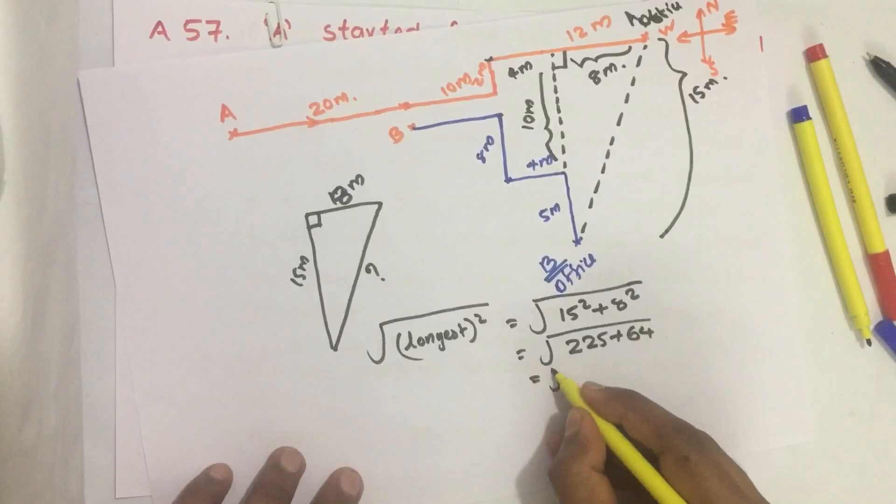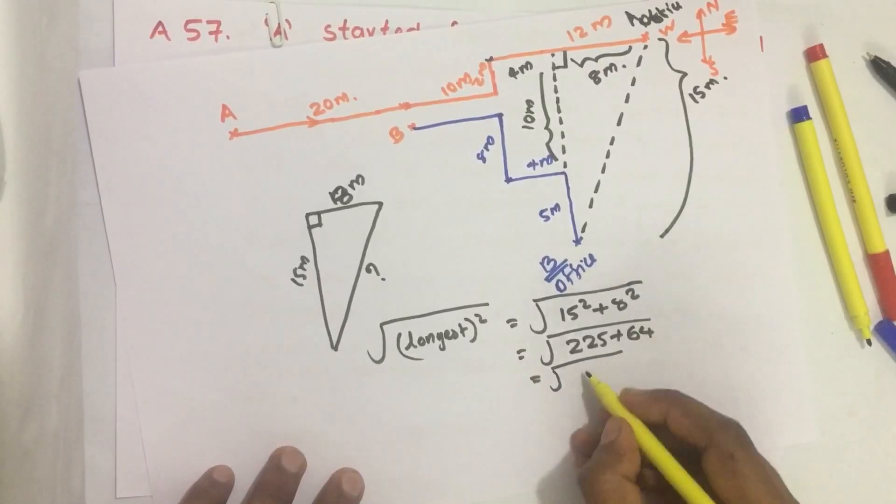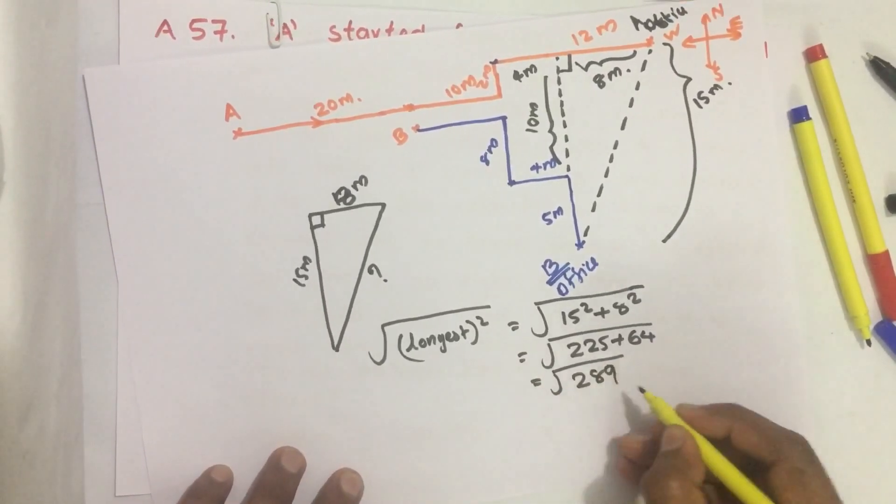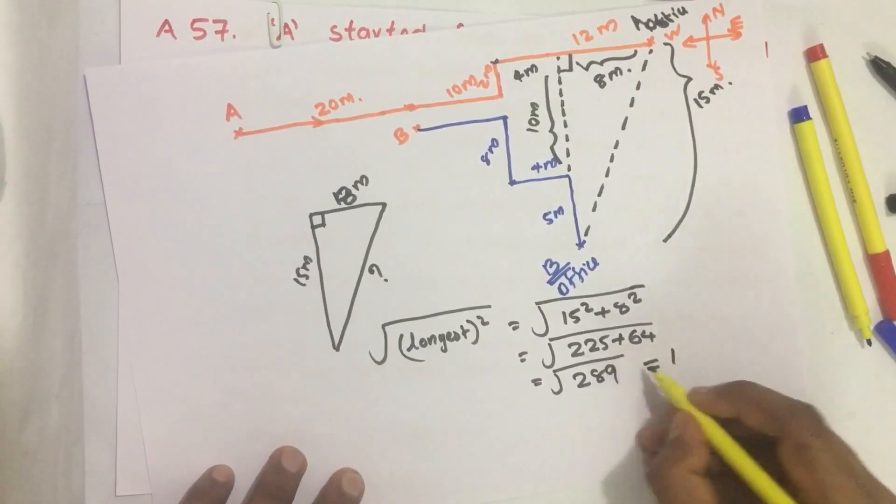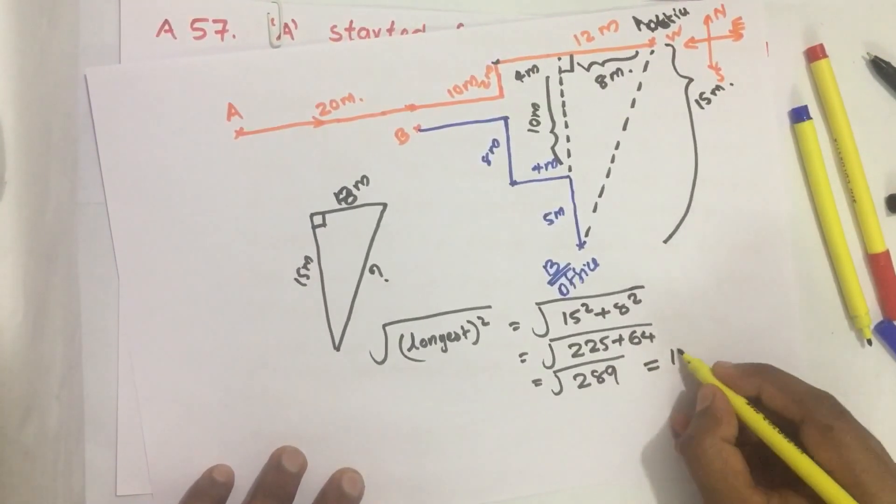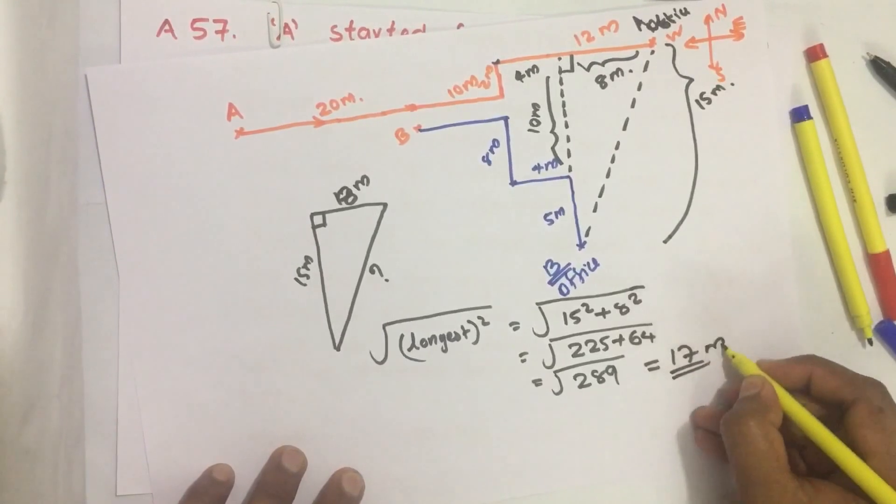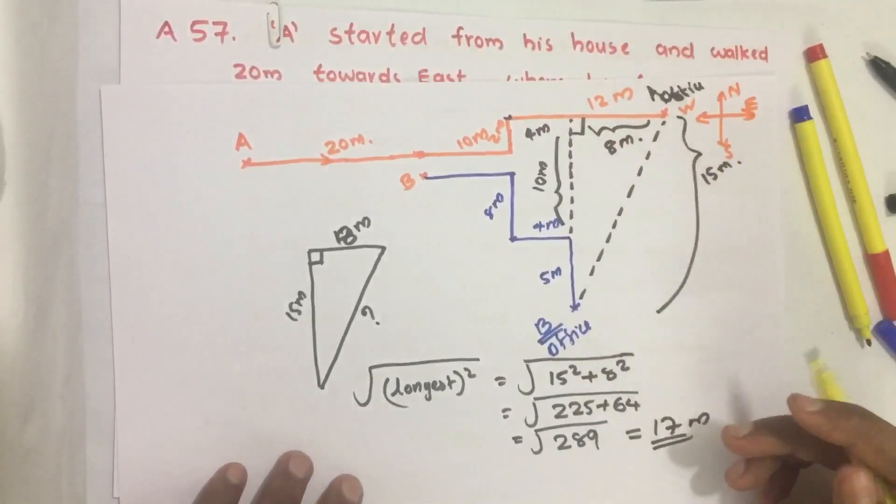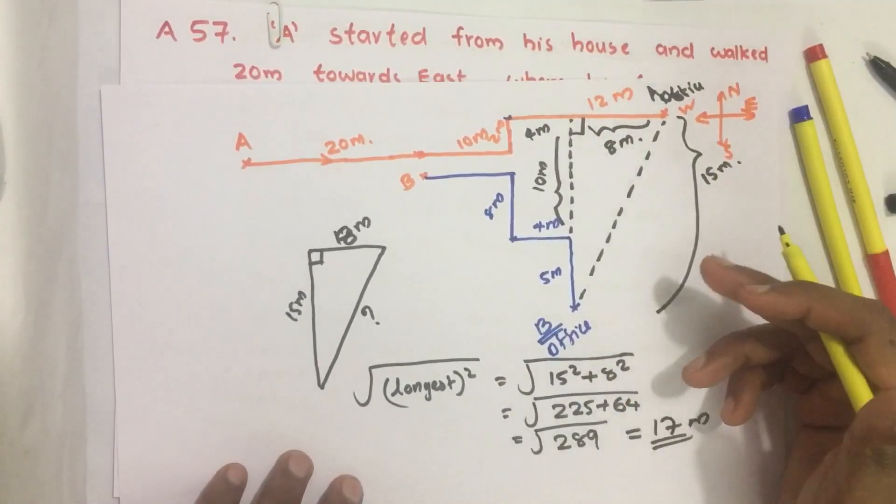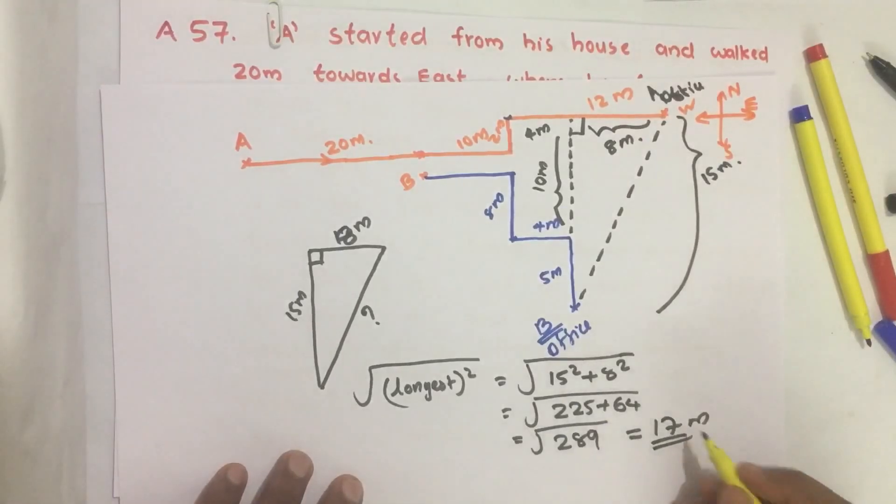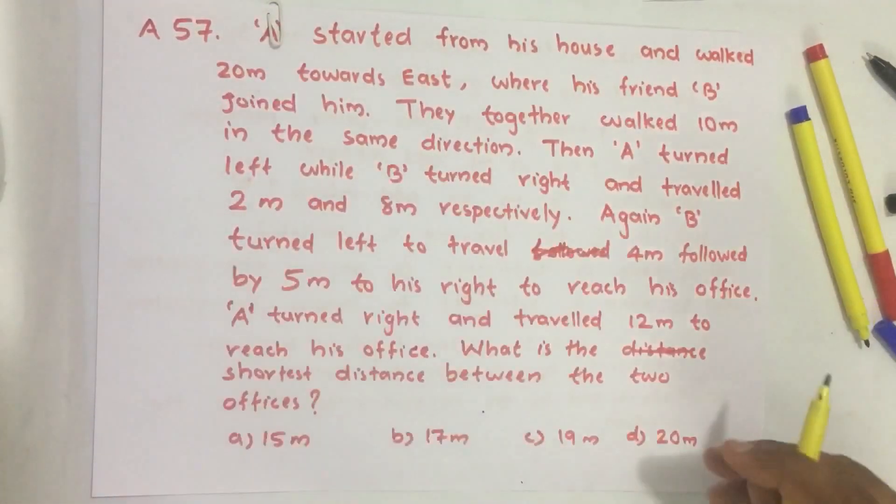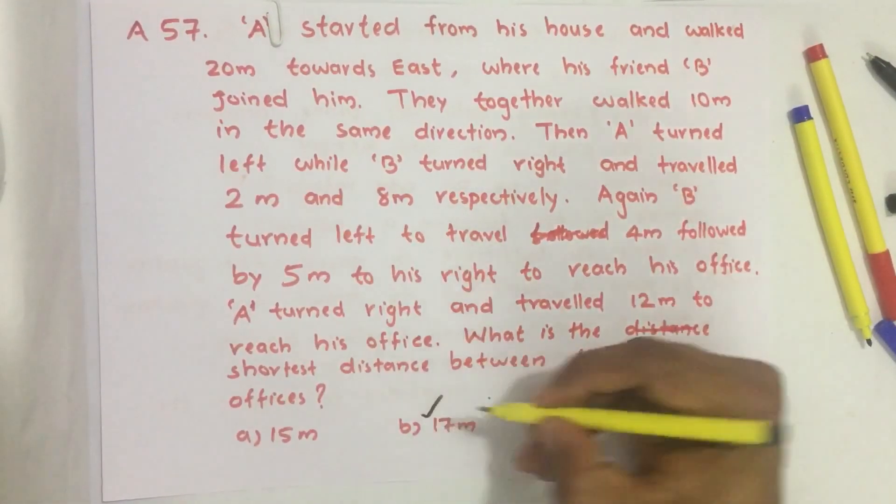We get root of 225 plus 64 is 289 which equals root of 289 equals 17. So the shortest distance between office of A and office of B equals 17 meters. And our answer is option B, 17 meters.